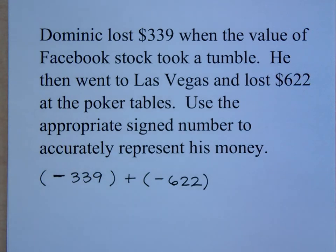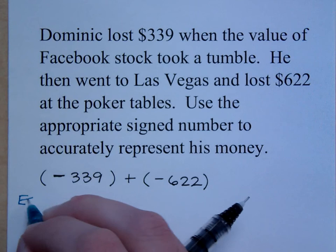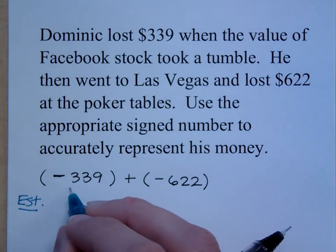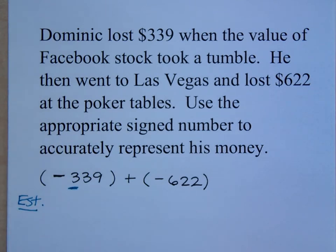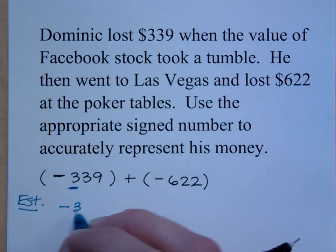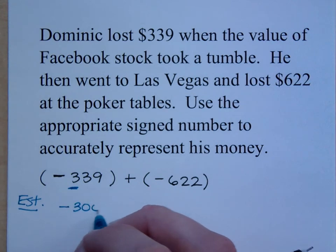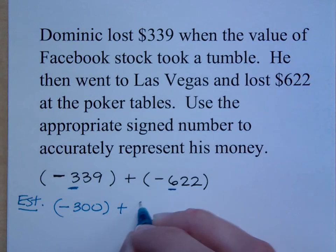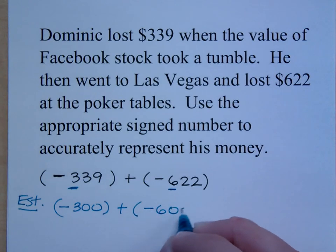Do you all agree with that? Don't be a Dominic. If I'm going to estimate this using front-end rounding, front-end rounding on this first number would give me negative $300. Plus front-end rounding on the second number gives me negative $600.